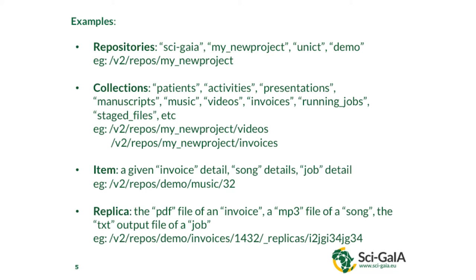Some items can also have replicas or attachments. For example, a PDF file of an invoice or an MP3 file of a song can be stored and accessed through G-Library REST APIs. You access these by first referencing the item — for example item 100432 — then using the underscore-replicas path and the replica ID. We call them replicas because we can have several copies of the same file distributed across cloud storages and grid storages.